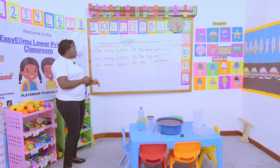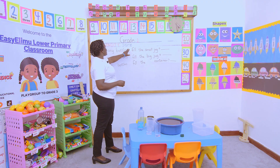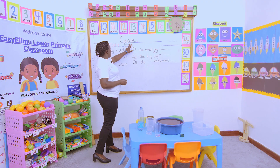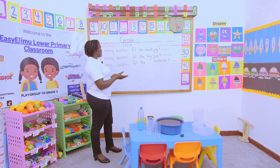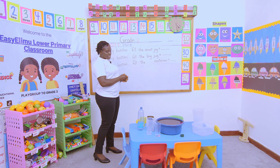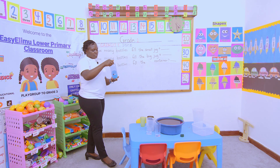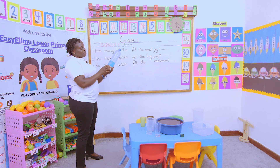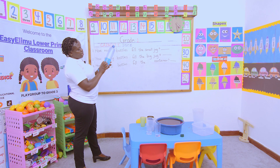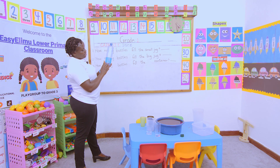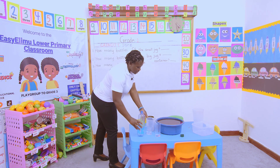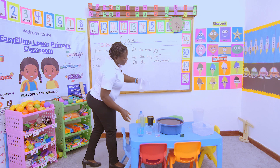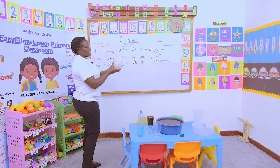Now, we have introduced something called a liter. We said how, what is a liter? Look at this bottle. This bottle is one liter. The volume of this bottle is one liter.